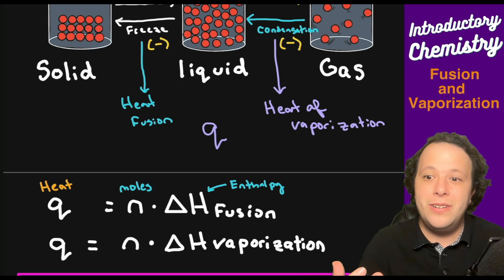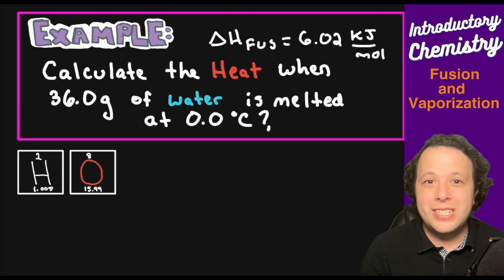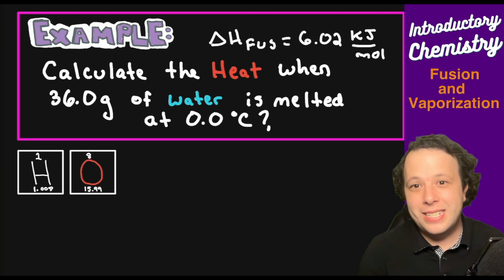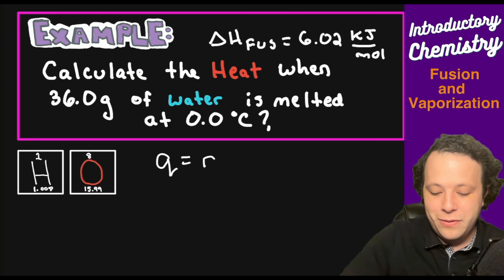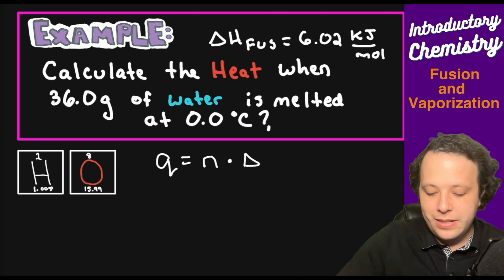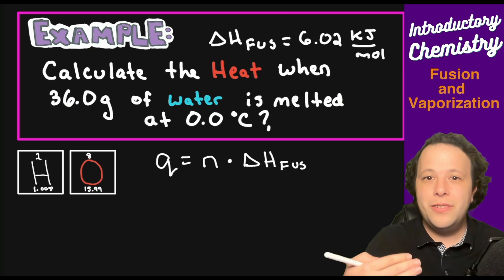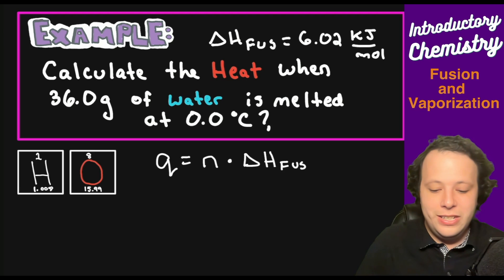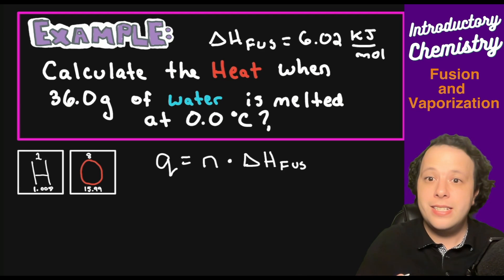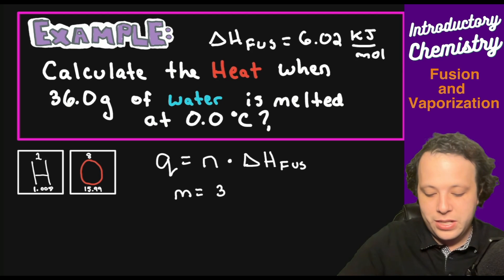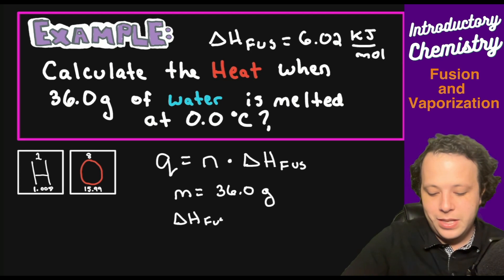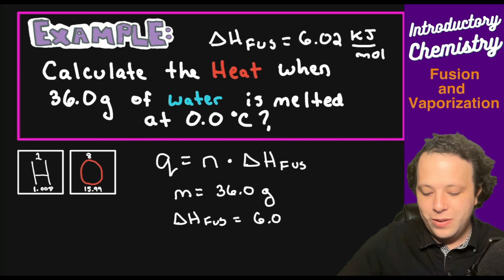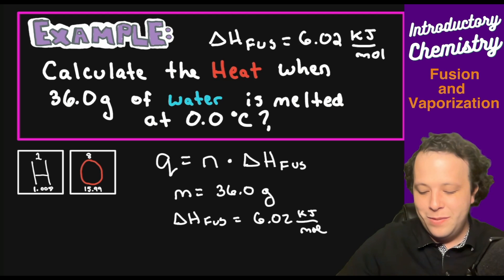Let's look at some examples. Example one: calculate the heat when 36 grams of water is melted at zero degrees C. We use q = n × ΔH fusion. We were given 36.0 grams — not moles — and a delta H of fusion value. So the first thing we need to do is convert grams to moles.